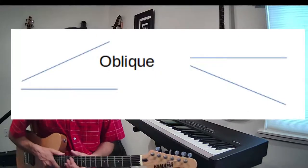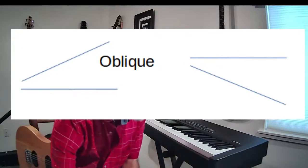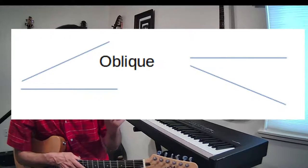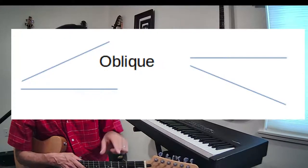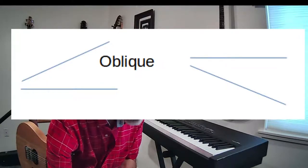Now let's go to oblique motion. Oblique motion is when you have a note that's not moving or holding, and another one that's moving up or down. So if I was doing this — I'm playing that low G note, playing the D string open, then the third fret, fifth fret, third fret open. That's called oblique motion because one of the notes is not moving.